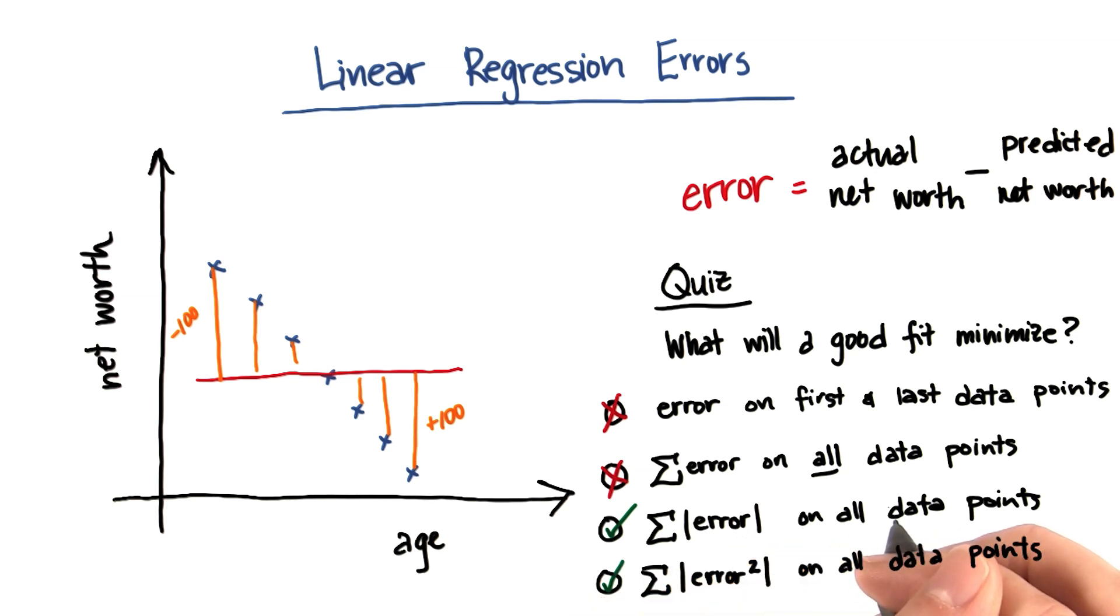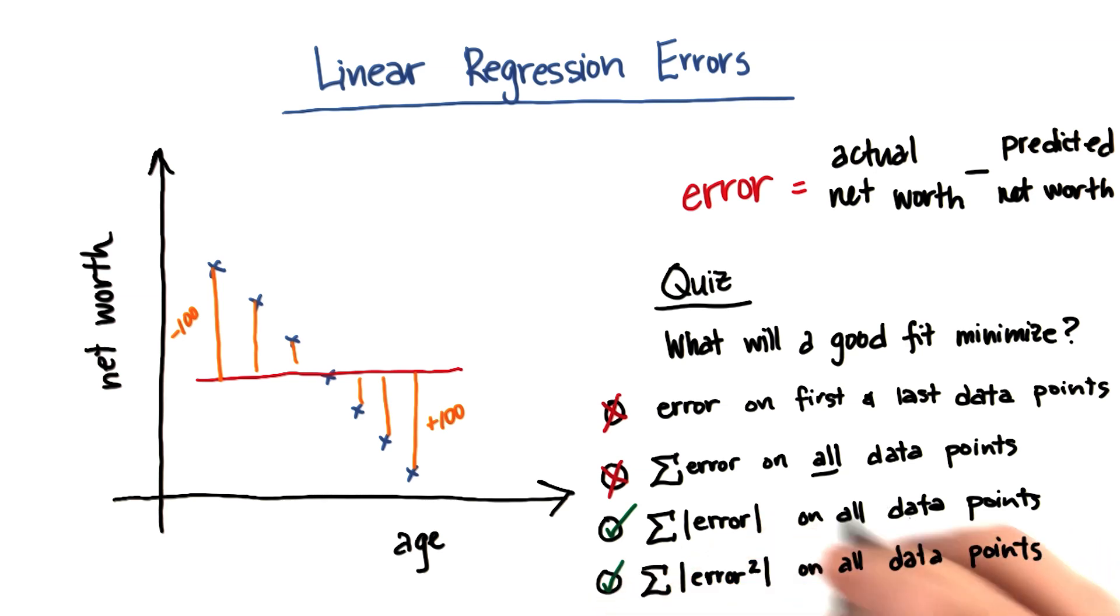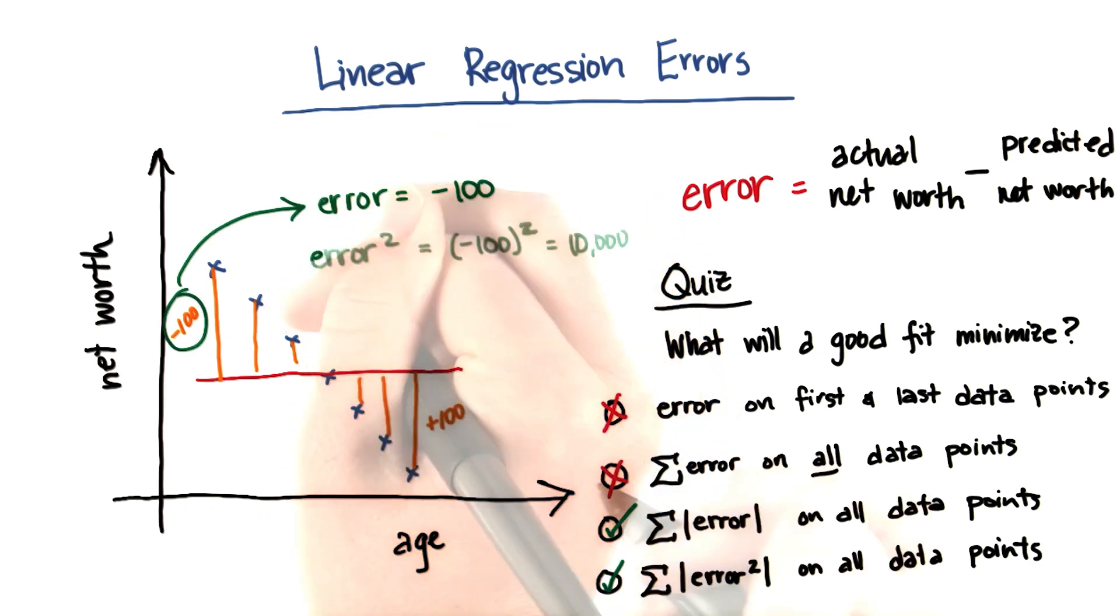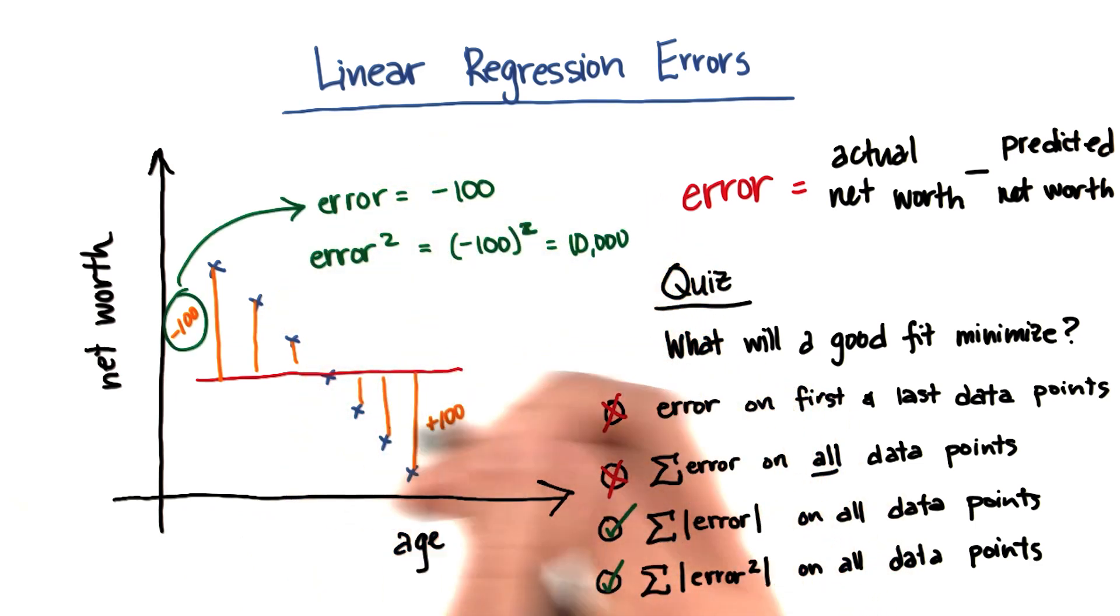This has the advantages that you get with the absolute value of the error. Because even if you have an error that's negative, when you square it, it becomes positive. And of course, if it's positive to begin with, it'll still be positive after you square it. So this will work as well.